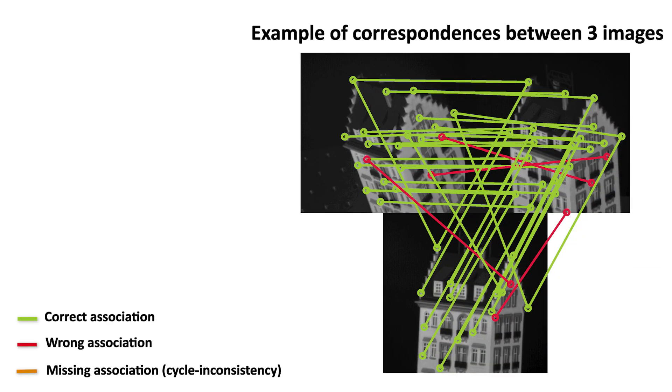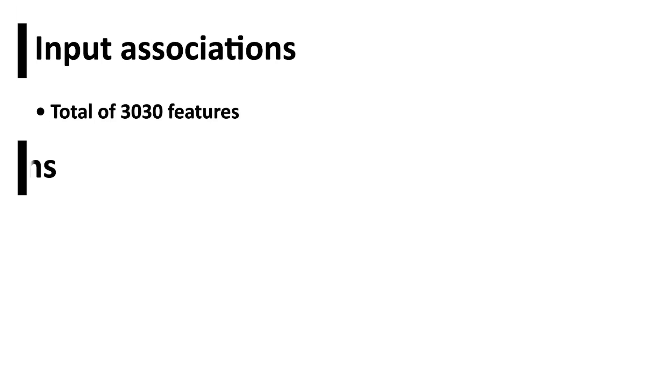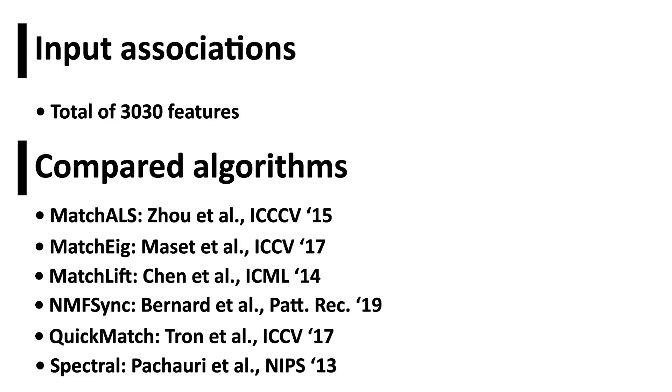This dataset consists of 101 images. Correspondence between feature points of all image pairs are obtained using standard feature matching routines. These putative matches, which contain error and are not cycle consistent, are used as input in CLEAR and other state-of-the-art algorithms.